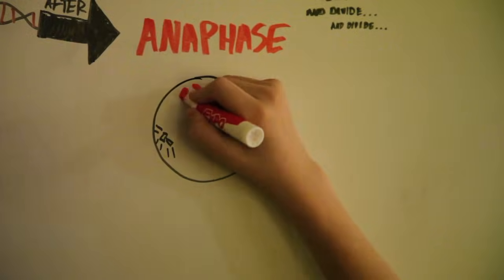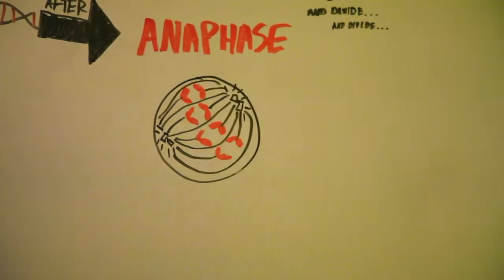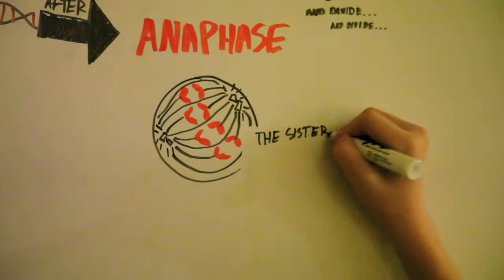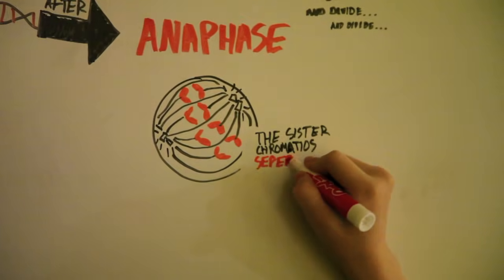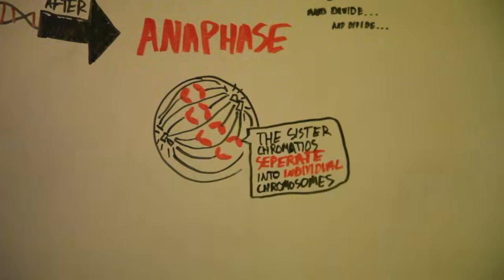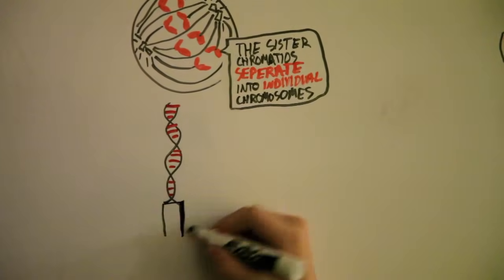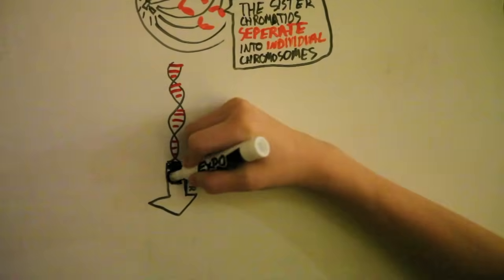After, in anaphase, the sister chromatids, which are the individual halves of the chromosome, separate into individual chromosomes. They are moved apart by the spindle fibers.